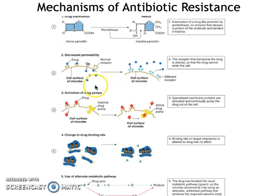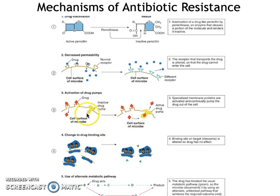A third way bacteria can resist antibiotics is activating drug pumps. This can't prevent the antibiotic from entering the cell — the antibiotic is always going to enter. But the cell is able to acquire a gene that allows it to make a protein that actually pumps the drug out of the cell. I like to think of this as being in a boat with a hole taking on water: as long as you're able to constantly bail the water out, you can stay afloat.